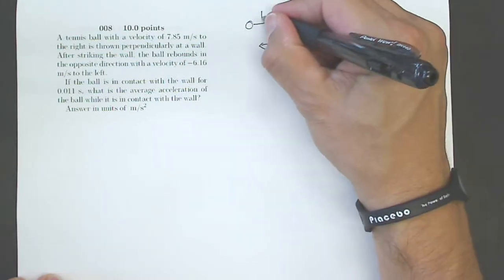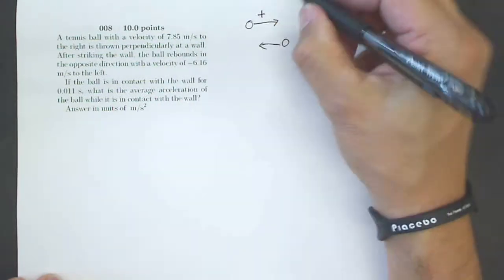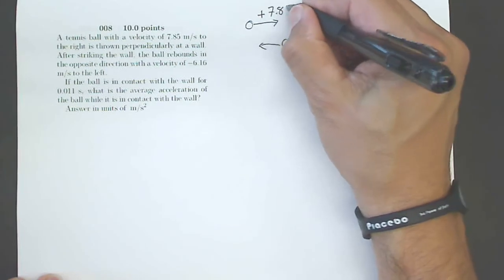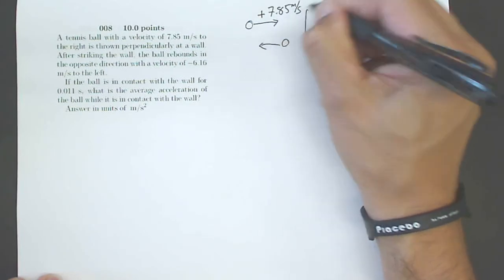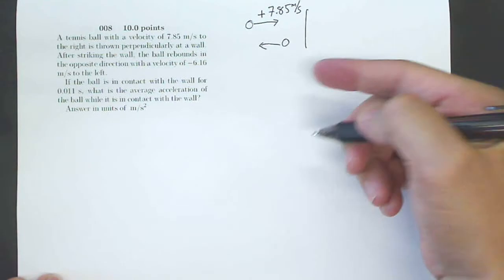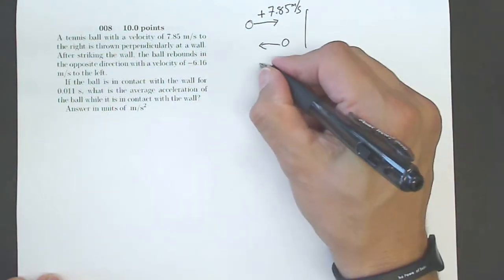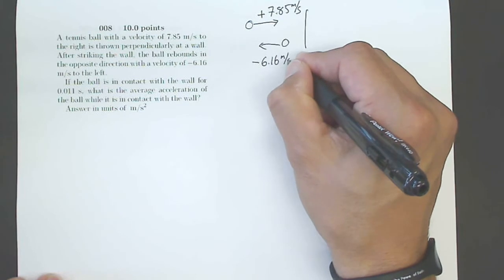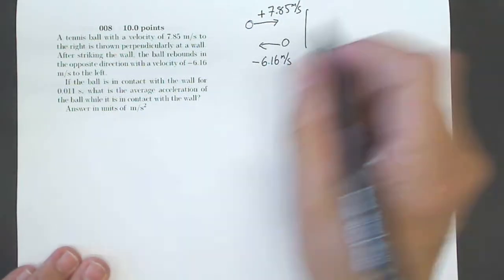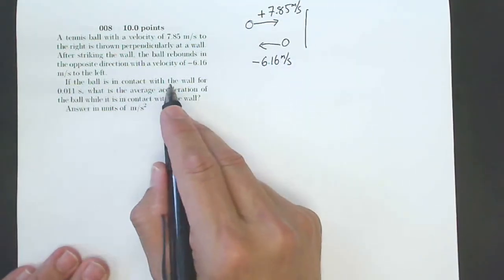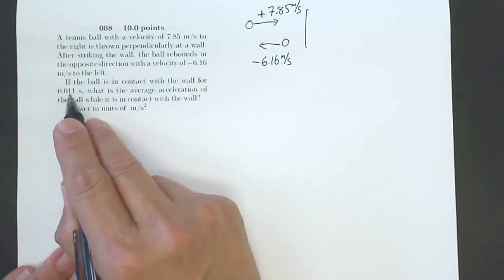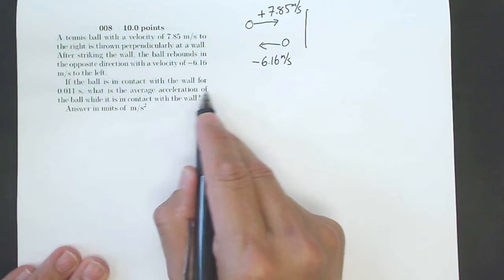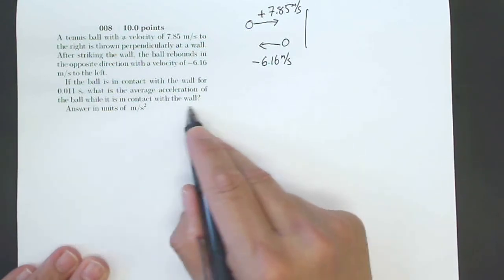So this one is positive velocity 7.85 meters per second. And my final velocity is in the other direction, left, so we call that negative 6.16 meters per second. Now it says if the ball is in contact with the wall for 0.011 seconds, what is the average acceleration of the ball while it is in contact with the wall?